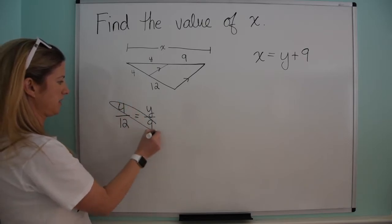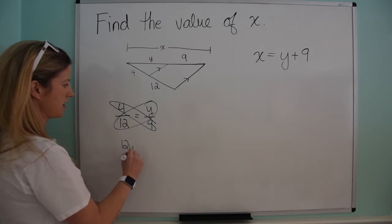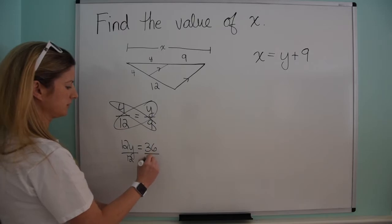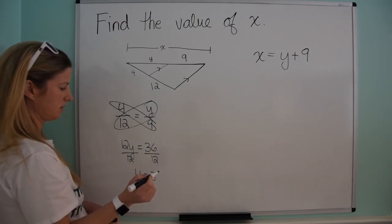So then I take my cross products here. 12 times y is 12y, 4 times 9 is 36. Divide both sides by 12, divide both sides by 12, y is going to equal 3.